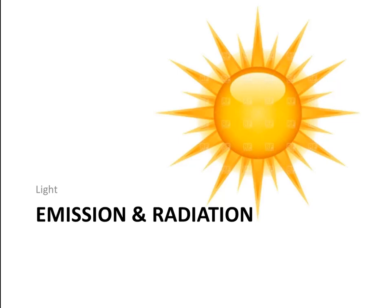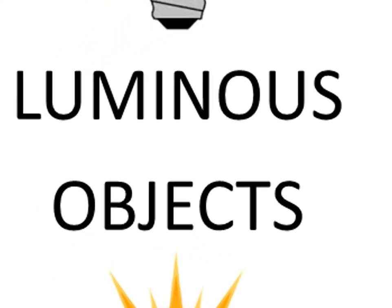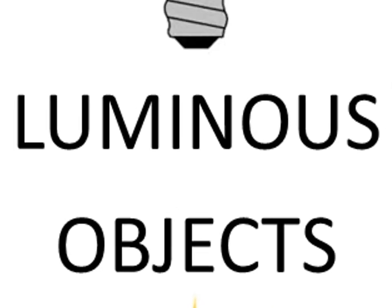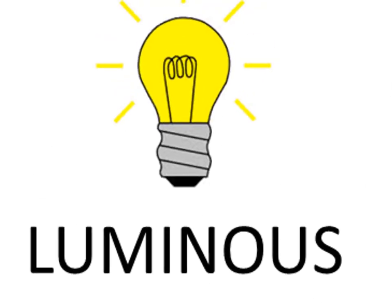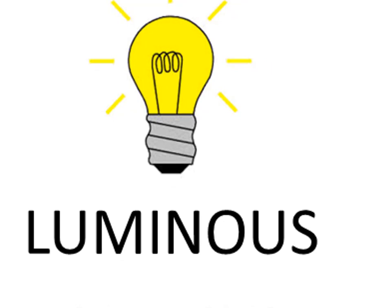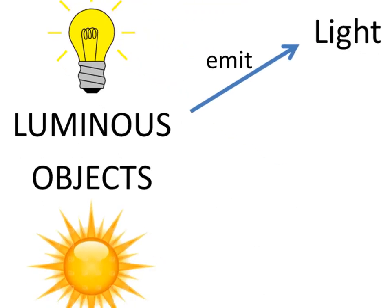Some objects like the sun can shine. We call such objects luminous. A light bulb when it's switched on is also luminous. Luminous objects give out light. The scientific way to say that is that luminous objects emit light. Emit means give out.